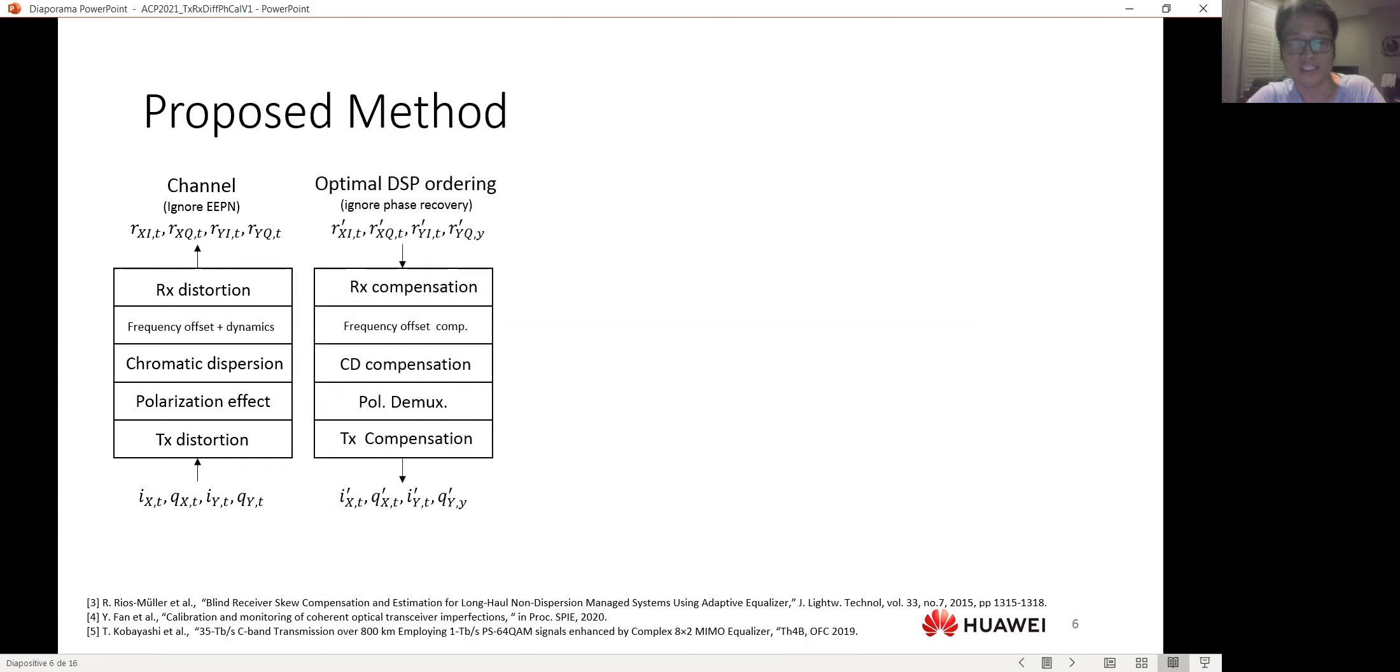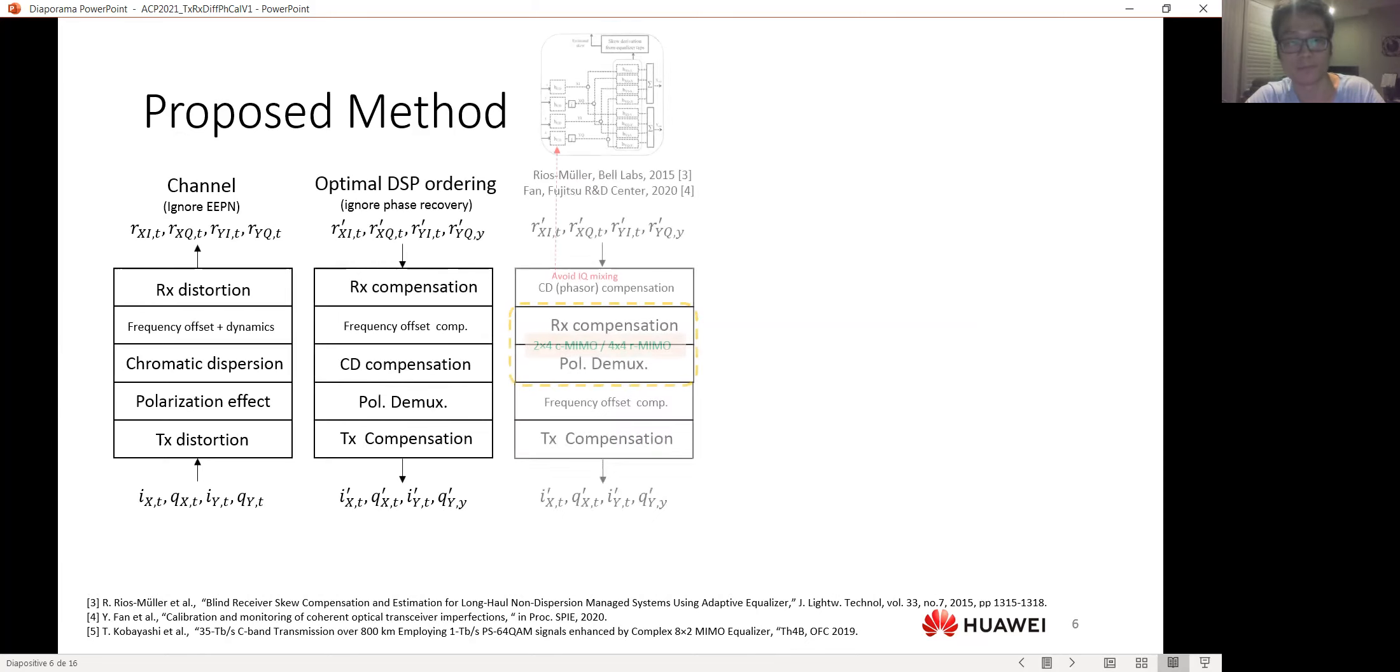To explain our proposed method, first the ordinary DSP is to compensate the channel impairment block by block according to an inverse reverse order of the physical channel. If we use a 2x4 complex MIMO or 4x4 real MIMO to estimate the receiver compensation or to do the receiver compensation, we have to shift the CD compensation in front of all the DSP.